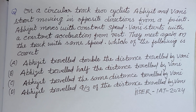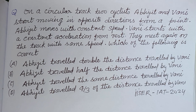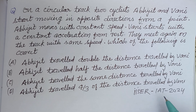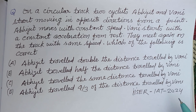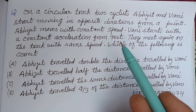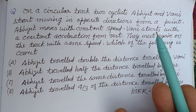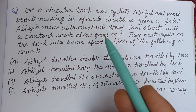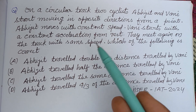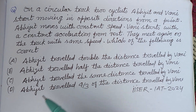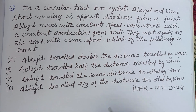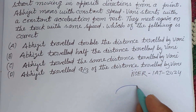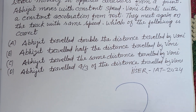Hello viewers, warm welcome to this YouTube channel. This question is from AIEEE IET 2024. On a circular track, two cyclists Avjit and Vani start moving in opposite directions from a point. Avjit moves with constant speed — this is a circular track.